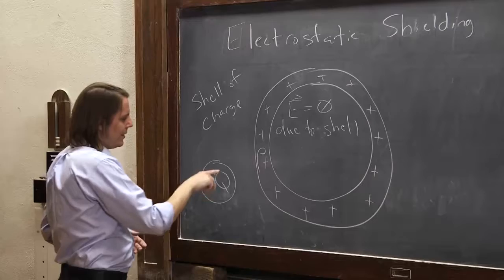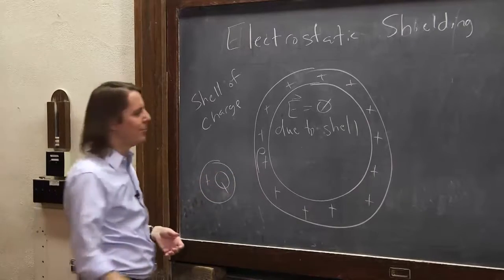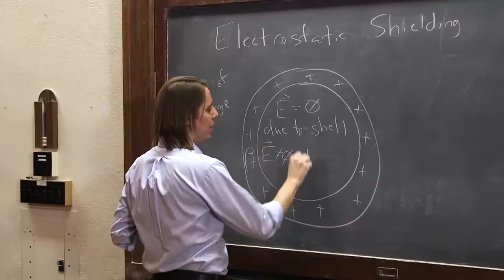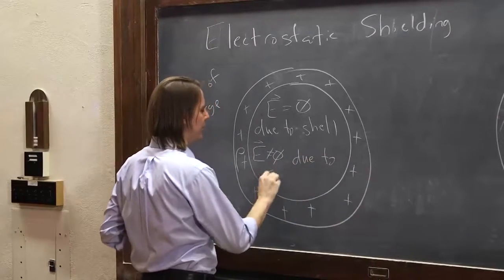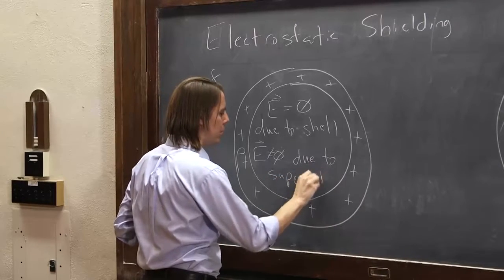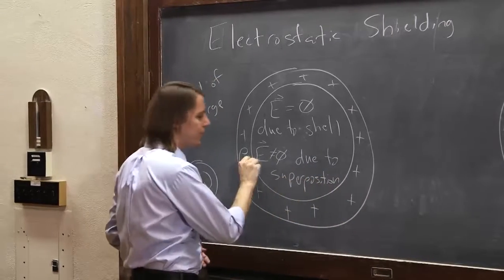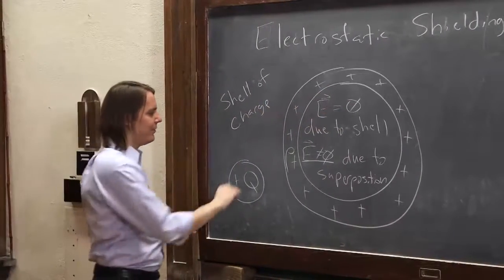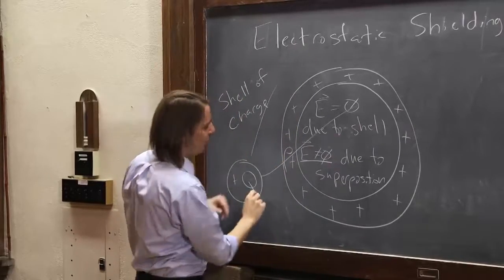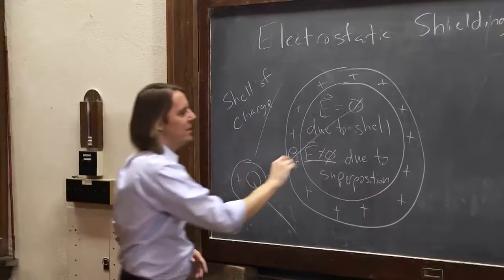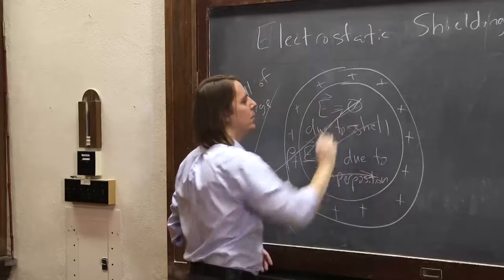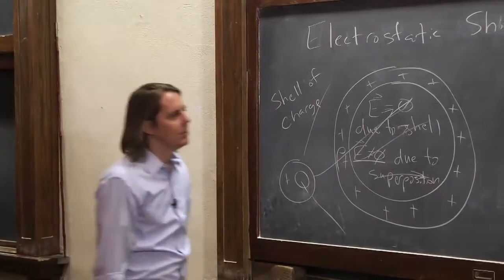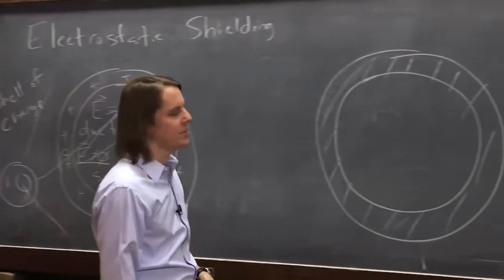However, the field due to this will happily go in because it's superposition. E inside here will not be zero due to superposition. So this is the real answer. It will not be zero. The shell contributes zero. Shell by itself makes zero. But the field lines out here will just go straight through. They'll bend around because of the presence of the charge, but eventually you will get field lines in here due to big Q, due to this big charge. So the shell of charge does not screen anything, does not shield you from anything.